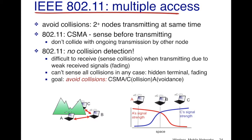Wireless signals are weakened by environmental factors, and receivers are not well equipped to detect collisions. If a collision occurs and the node doesn't know about it, it won't retransmit the lost packet, which is not acceptable. Therefore, the goal is collision avoidance. The protocol used is CSMA/CA, where CA stands for collision avoidance.